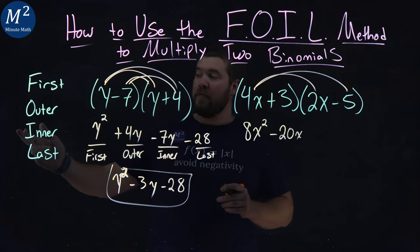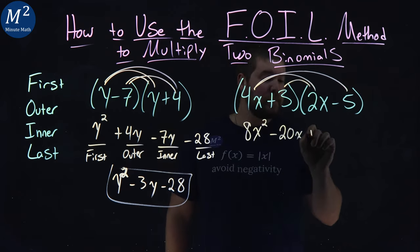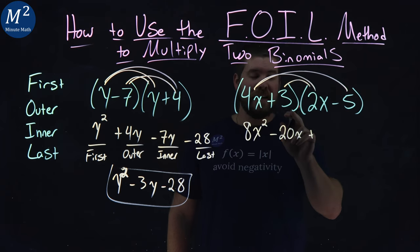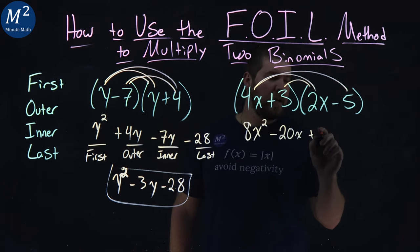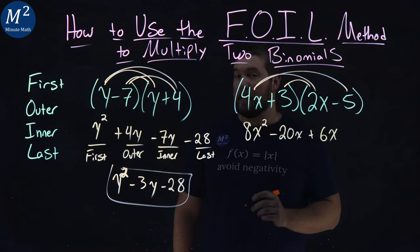From there, we have the inner values. 3 times 2x plus 3 times 2x. 3 times 2 is 6. 6x right there.